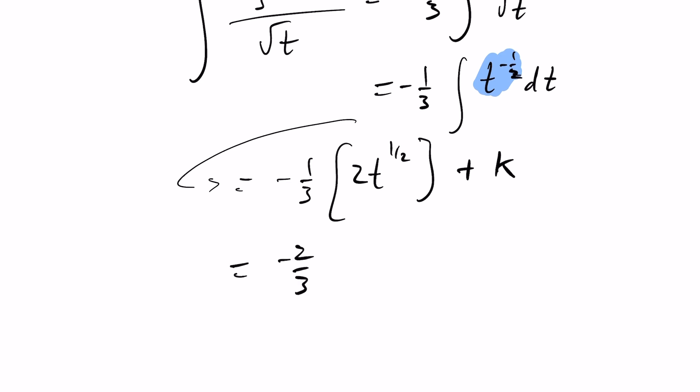So this becomes minus 2 thirds, the square root of t plus k. And like we were talking about, I had let t equal 1 minus x cubed, so this becomes the square root of 1 minus x cubed, plus some constant value k.